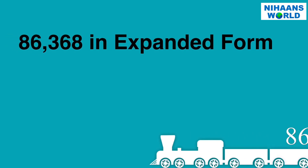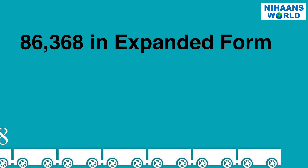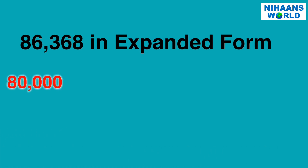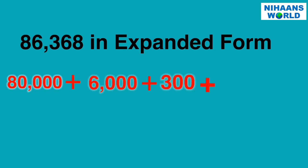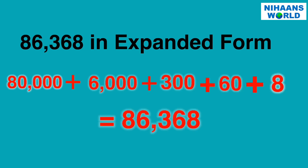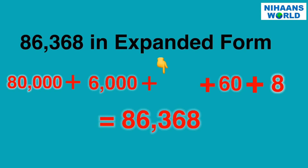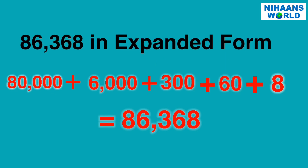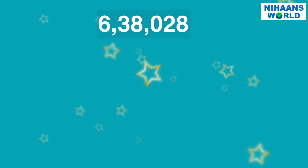Here is another example: 86,368 in expanded form. 80,000 plus 6,000 plus 300 plus 60 plus 8 is equal to 86,368. The 8 is in the ten-thousands place, equaling 80,000. The 6 is in the thousands place, equaling 6,000. The 3 is in the 100's place, equaling 300. The 6 is in the 10's place, equaling 60. The 8 is in the 1's place, equaling 8.